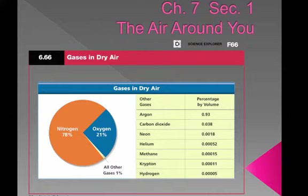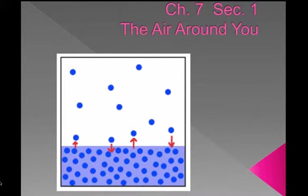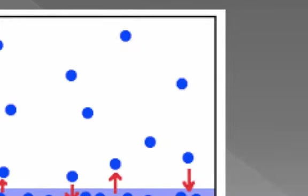The remaining gases in the environment are called trace gases because only small amounts of them are present. So far we have discussed the composition of dry air. In reality, air is not dry because it contains water vapor. Water exists in three states: liquid, solid like ice, and gas — water vapor.